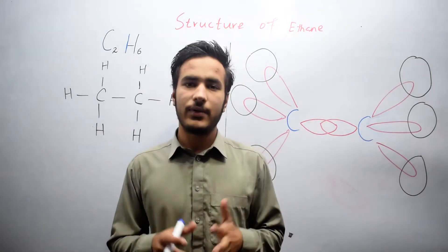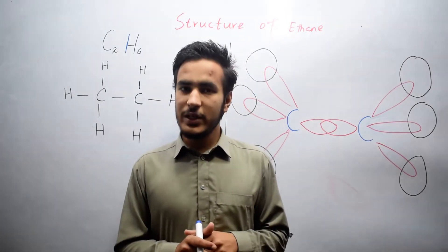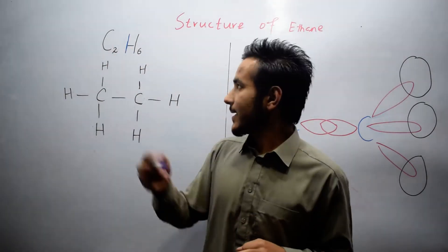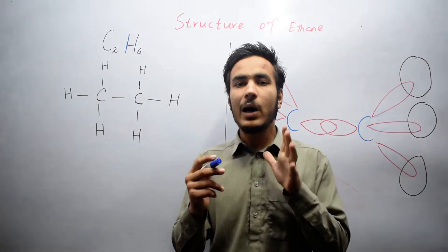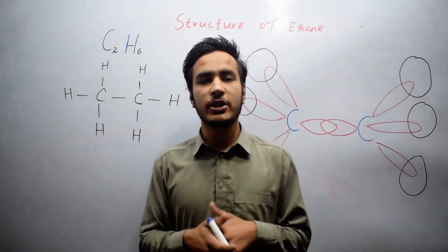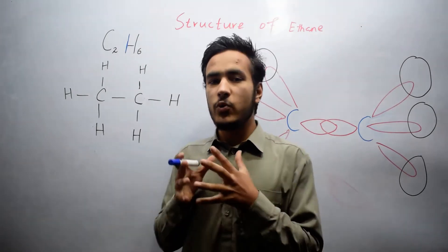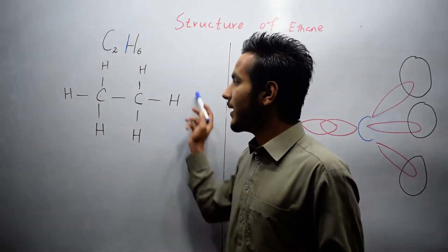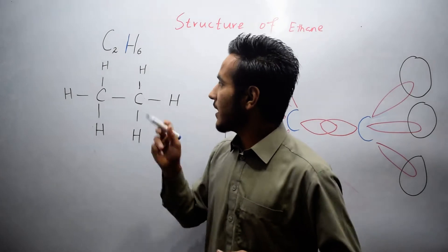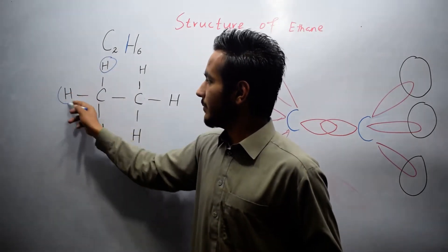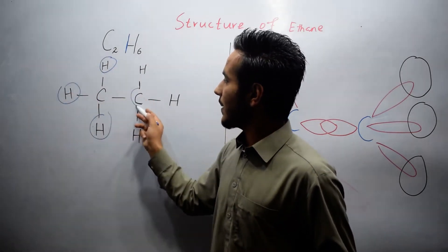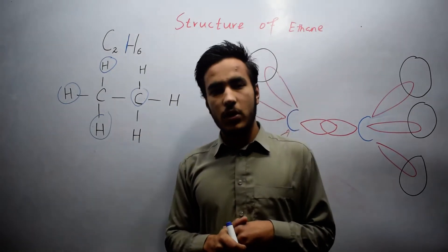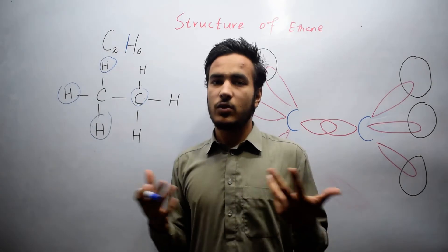Ethane is the second member of alkanes, in which there are two carbon atoms and six hydrogen atoms. This is the general structure of ethane, in which each carbon is bonded with three hydrogen atoms and one carbon atom. In this way, each carbon forms four bonds, which are equivalent bonds.